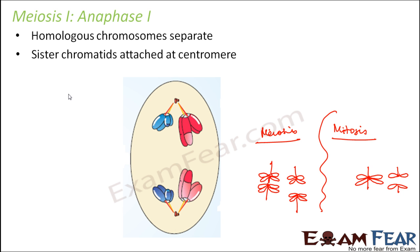The sister chromatids are still attached at the centromere. Also, the cell lengthens because of the non-kinetochore microtubules. The kinetochore microtubules — those connected to kinetochores of chromosomes — are trying to pull the homologous chromosomes towards opposite poles. The non-kinetochore microtubules will stretch and lengthen the cell, so there will be an elongation of the cell at the same time.